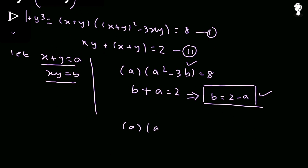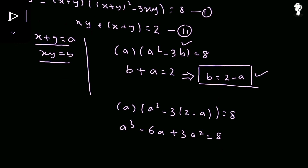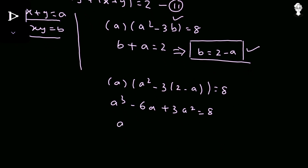Substituting b = 2 − a into the first equation: a(a² − 3(2 − a)) = 8. Expanding gives a³ − 6a + 3a² = 8. Rearranging all terms, we get the cubic equation a³ + 3a² − 6a − 8 = 0.